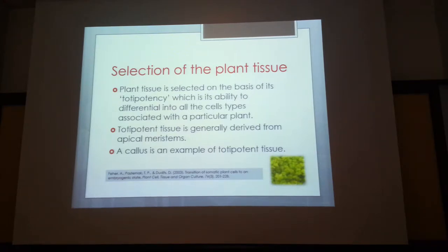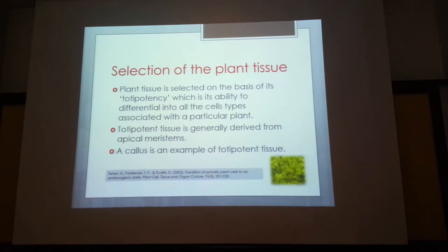Banana grows very easily in the lab. The meristem in banana has two advantages: it is actively growing, and because it is deep inside the plant it is already sterile. For orchids, we use different methods — generally the capsule — but the capsule is already compromised and may have some bacteria or fungi associated with it.